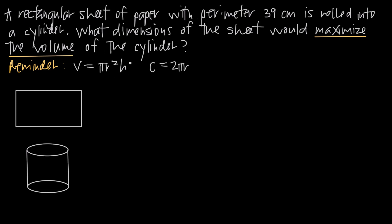Whatever function we're working with — in this case, the volume function — we need to get it in terms of one variable only. Right now we have a variable r for the radius and a variable h for the height, so we need to go from two variables to one variable. The other information we've been given is that we have a rectangular sheet of paper with perimeter 39 centimeters.